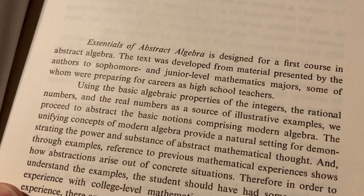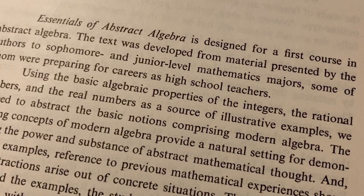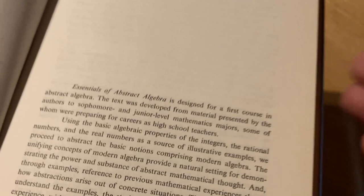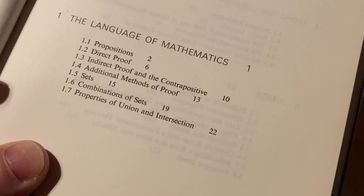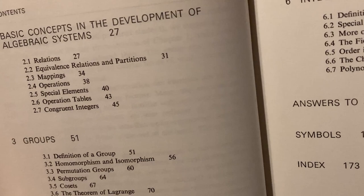This is meant to be a gentle introduction to abstract algebra. Essentials of Abstract Algebra is designed for a first course in abstract algebra. The text was developed from material presented by the authors to sophomore and junior level mathematics majors, some of whom were preparing for careers as high school teachers. So this is meant to be an introductory book. The only prerequisite is that you have some basic knowledge of proof writing. It does start with basic proof writing, the language of mathematics. But in my opinion, it's better to have more than this before jumping into this book. Still, if you can find this book for not a very expensive price, I definitely think it's worth getting, especially considering that I'm pretty sure it was never reprinted.